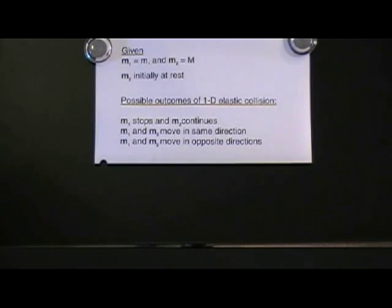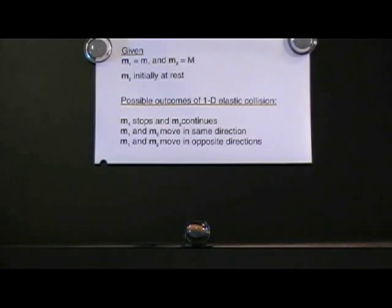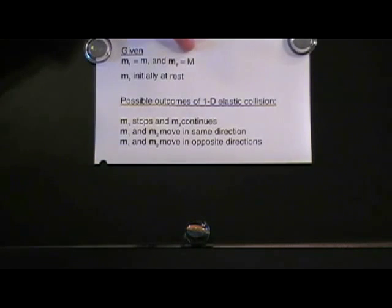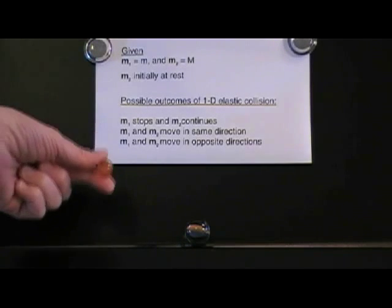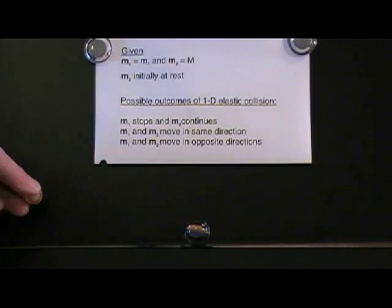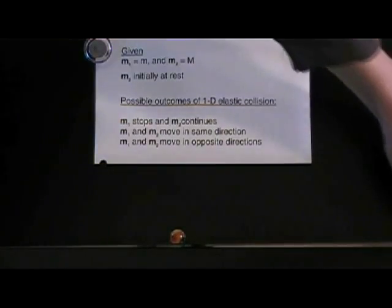Welcome. Before we work on the problem at hand, I want to consider possible outcomes of the scenario that we're considering. We're given two masses, m1 and m2. m2 is denoted by a capital M, but that doesn't necessarily mean that its mass is larger. m2 is initially at rest. So what could happen if we have m1 colliding with m2? Well, we could have m1 stopping and m2 continuing on in the same direction.